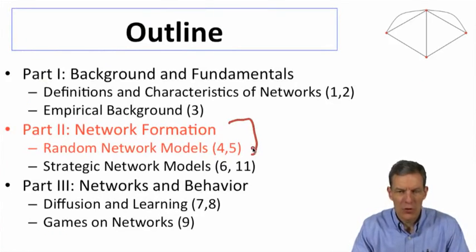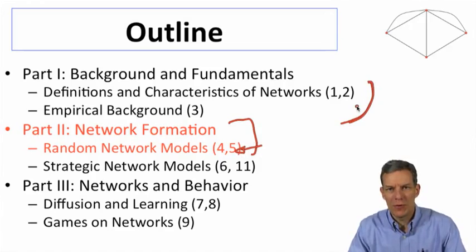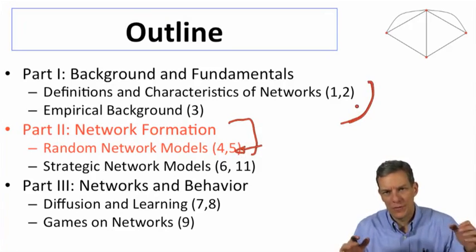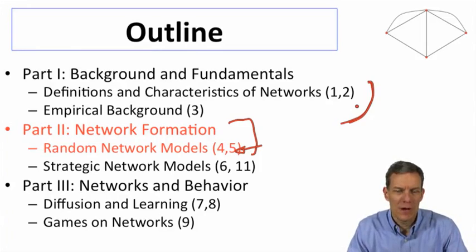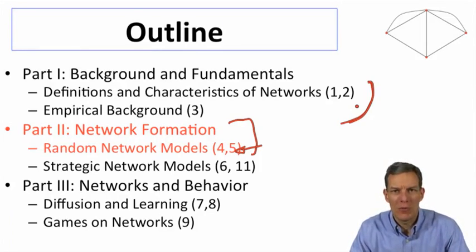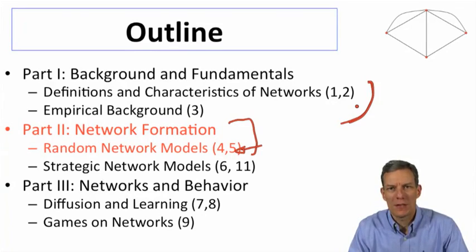So again, we're talking about network formation now, random network models. We had a whole series of properties that we observed in real networks that are stylized facts that sometimes emerge in different contexts. We might begin to start thinking about what kinds of models would we need to match that.